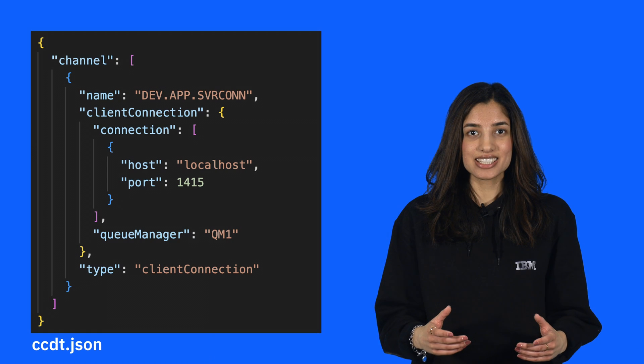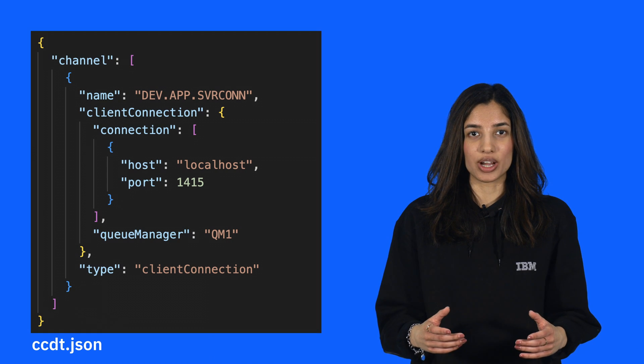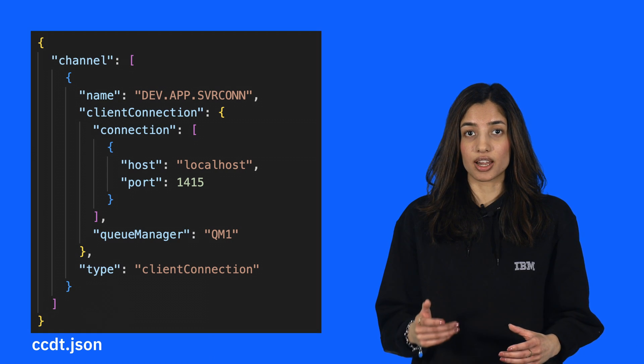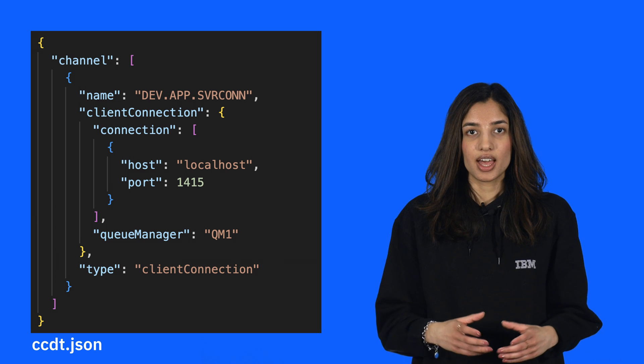Let's now look at an example of a basic CCDT, which you can find linked in the description, that consists of just one channel definition. This channel definition contains the information required for an application to establish a client connection to QM1.